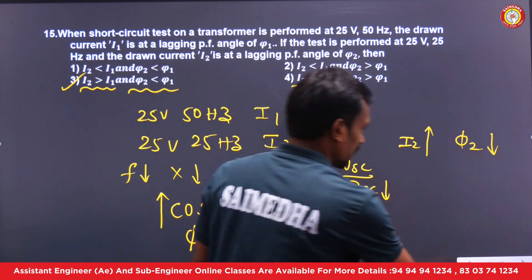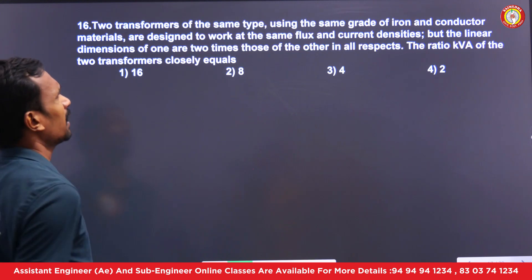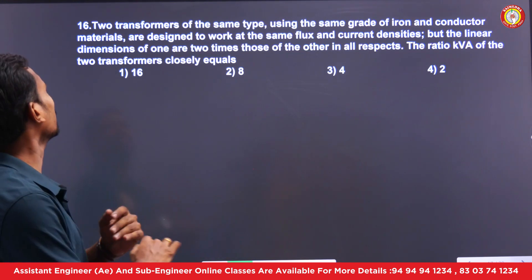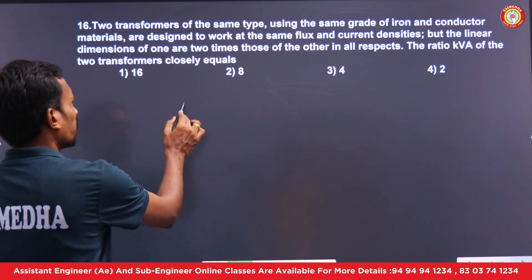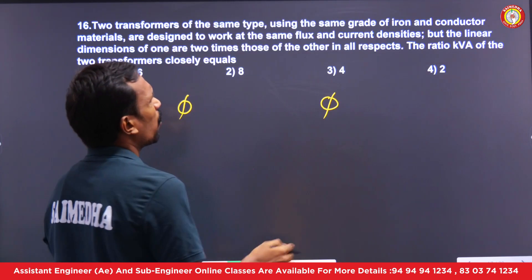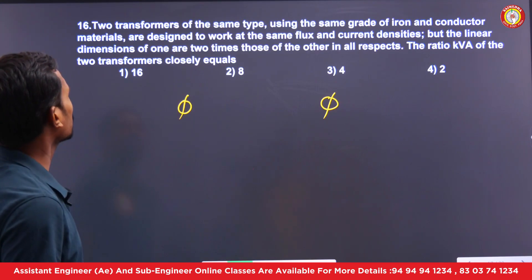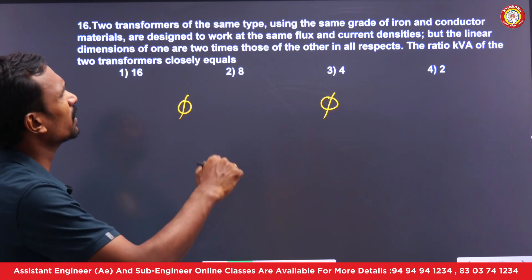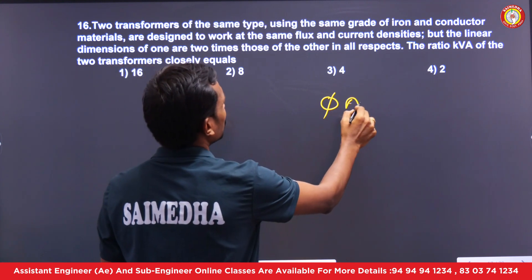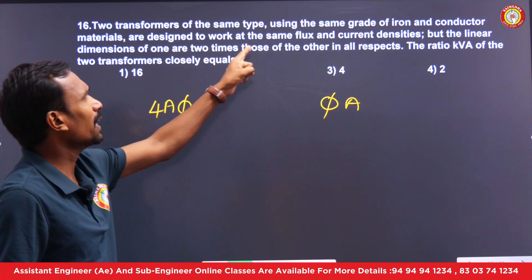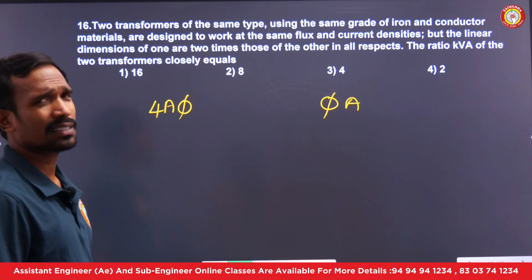Next question: two transformers of the same type using the same grade of iron and conducting material are designed to work at the same flux and current densities. Conductors are the same, but the linear dimensions of one are two times those of the other. For the larger transformer, linear dimensions are doubled, so the area becomes four times.